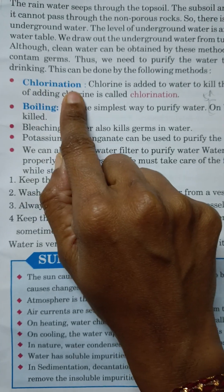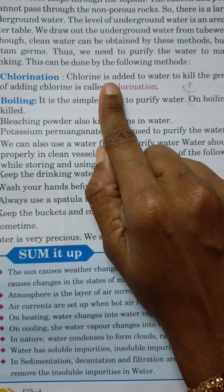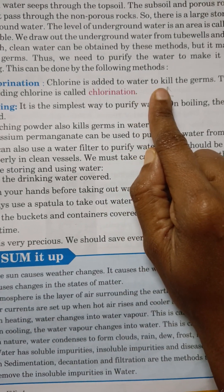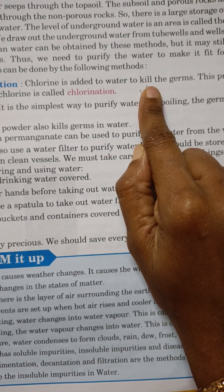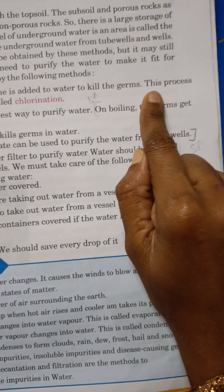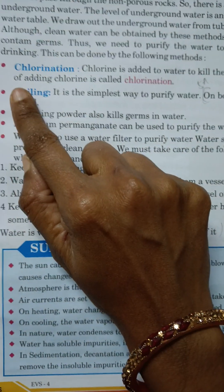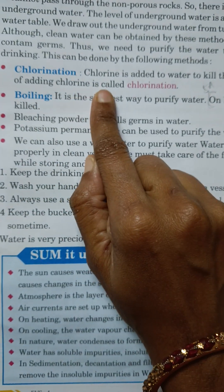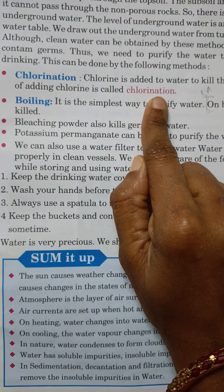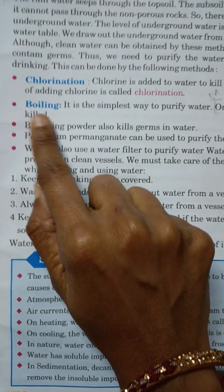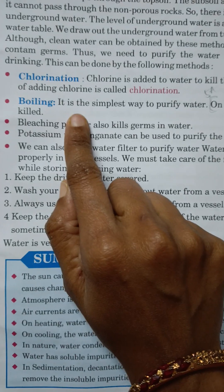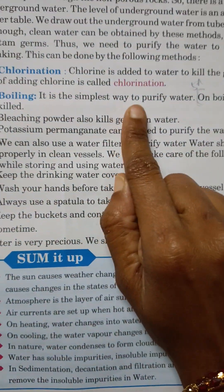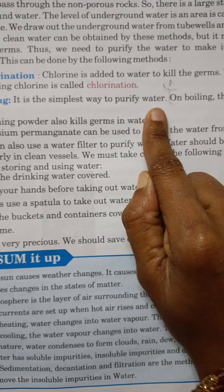Chlorination: Chlorine is added to water to kill the germs. This process of adding chlorine is called chlorination. Boiling: It is the simplest way to purify water.